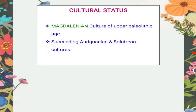Moving forward to cultural status, they followed the Magdalenian culture. This is a culture where a number of tools were used — bones, stones, and ivory products. They were also well-versed in paintings and crafting. This culture was followed in the Upper Paleolithic age and succeeded the cultures of Aurignacian and Solutrean.